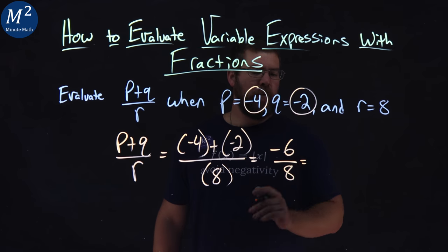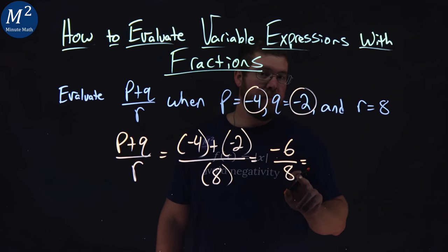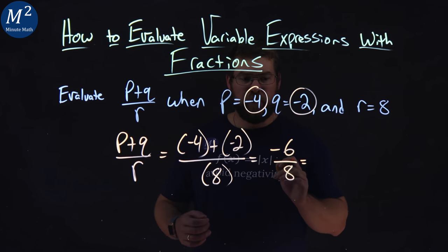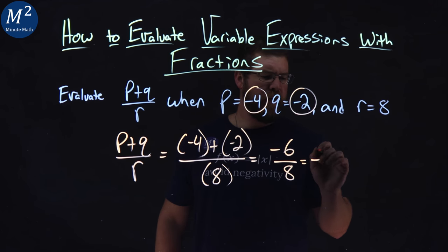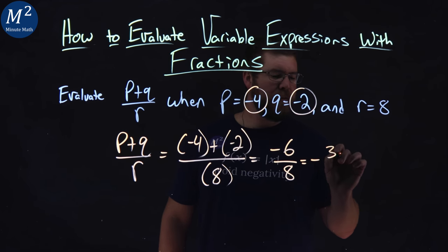Now, hopefully you can see this. Well, negative 6 and 8 both have a common factor of 2. Negative 6, if you want to see it this way, is 3 times 2, and 8 is 4 times 2.